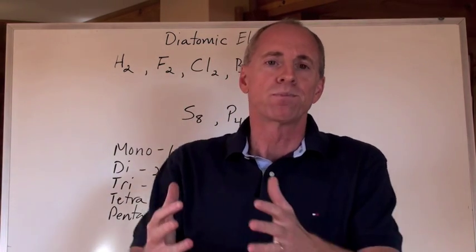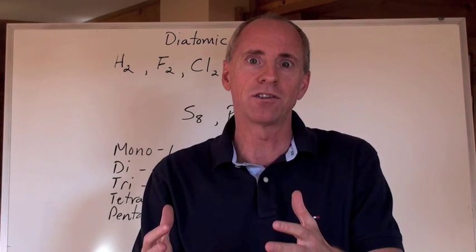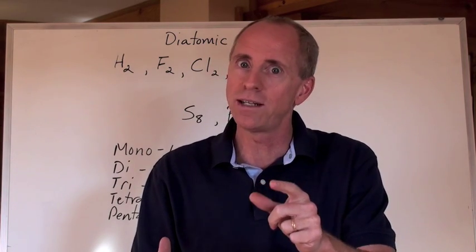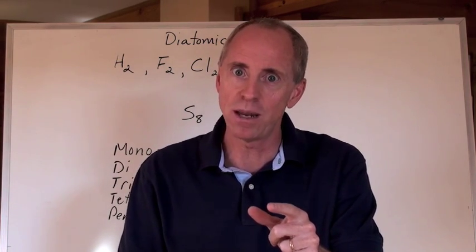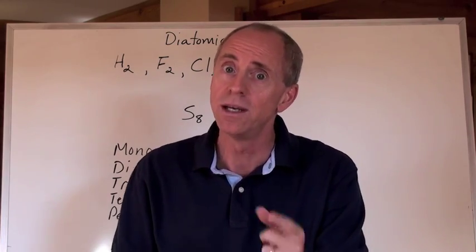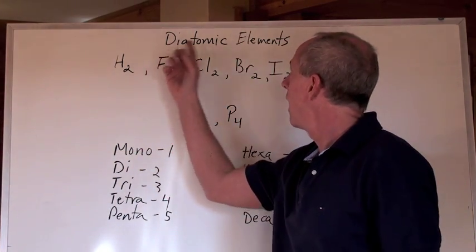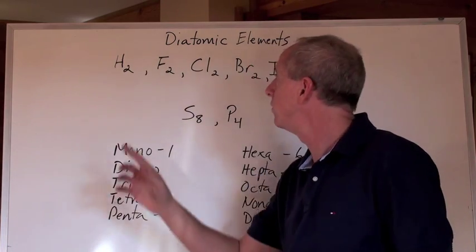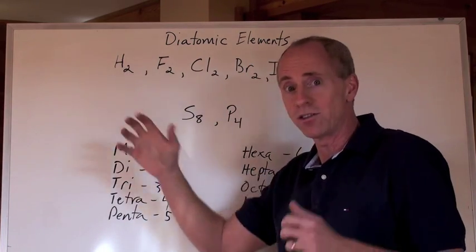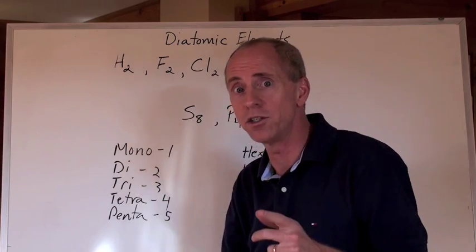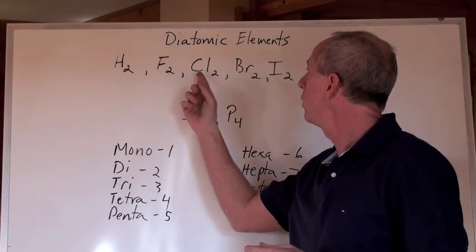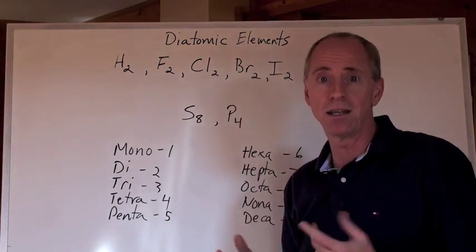Well, the diatomic elements are those that like to occur in twos. Now, your teacher is going to be very tricky and try to see if you understand which elements are diatomic. Sometimes they'll say you have some chlorine gas. What they're really saying is, don't write down Cl on your piece of paper, you write down Cl2. Here's the thing, the diatomic elements, and you've got to commit them to memory, but it's pretty easy, are hydrogen gas, fluorine, chlorine, bromine, and iodine.